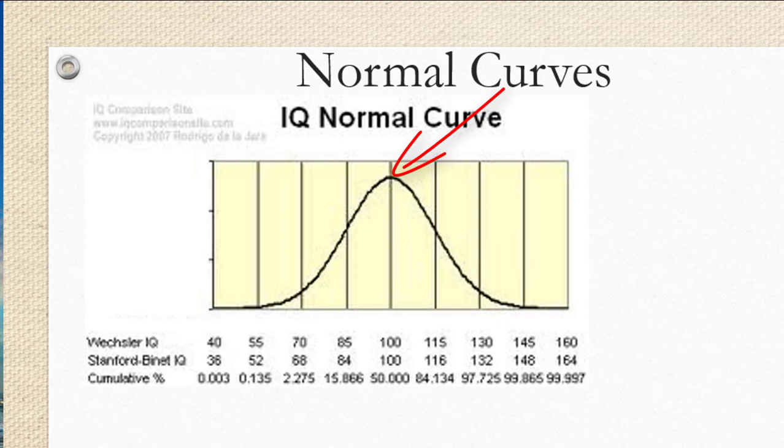Since it's in the middle of the distribution, it's also the median value of the distribution. Notice that IQ scores very high above 100, like 160, occur very rarely, as do very low IQ scores like 40.